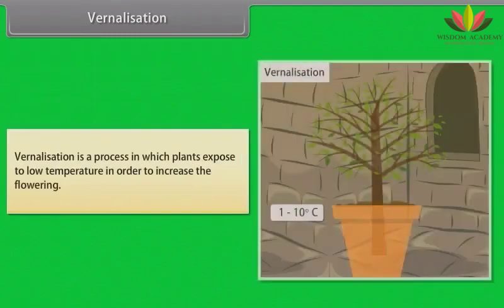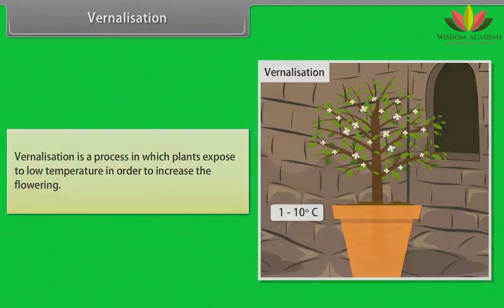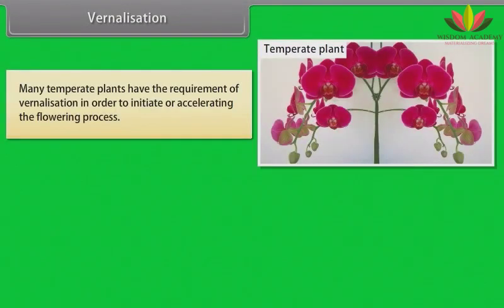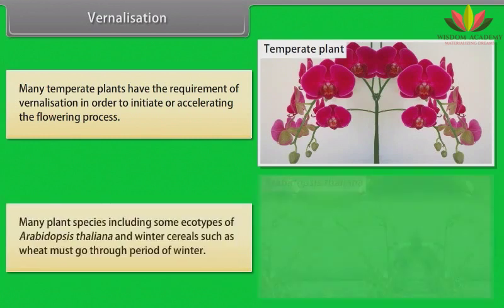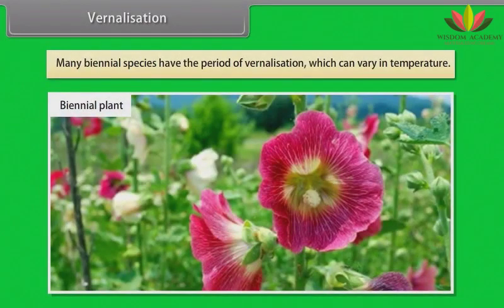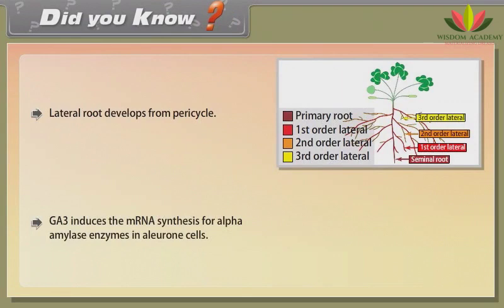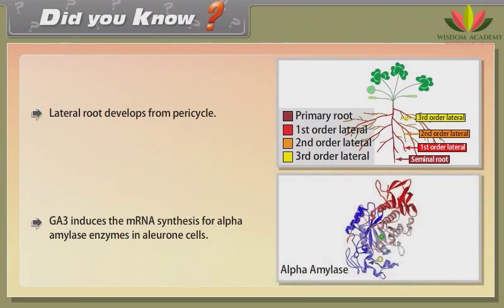Vernalization is a process in which plants are exposed to low temperature in order to increase the flowering. Many temperate plants have the requirement of vernalization in order to initiate or accelerate the flowering process. Many plant species, including some ecotypes of Arabidopsis thaliana and winter cereals such as wheat, must go through a period of winter. Many biennial species have a period of vernalization which can vary in temperature. Did you know: lateral roots develop from the pericycle; GA3 induces mRNA synthesis for alpha-amylase enzymes in aleurone cells.